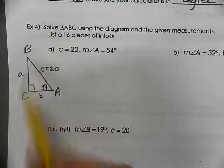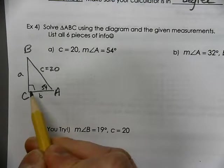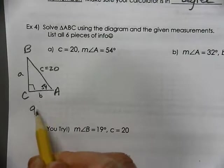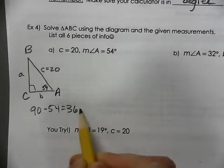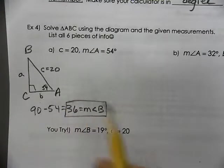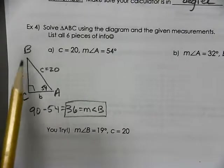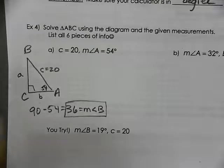So to find the measurement of angle B, we could say that the acute angles of a right triangle are complementary. So 90 minus 54 gives us 36. So that's the measurement of angle B. Now I know all three angles: 36, 54, and 90. Always remember, the acute angles of a right triangle are complementary. They add up to 90.